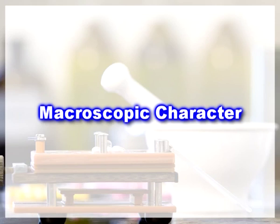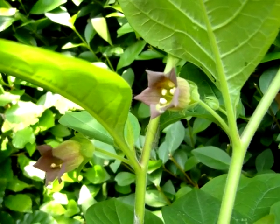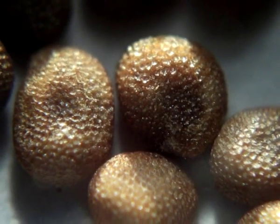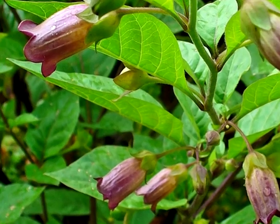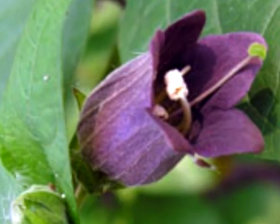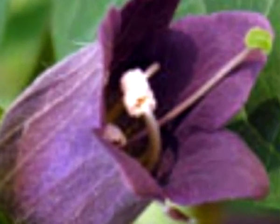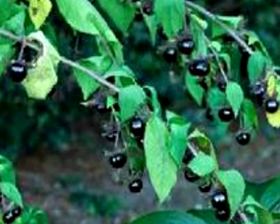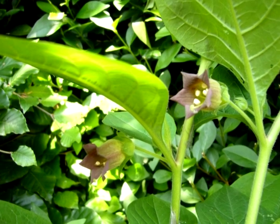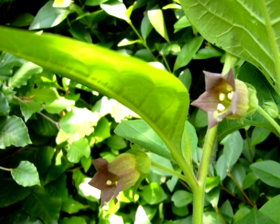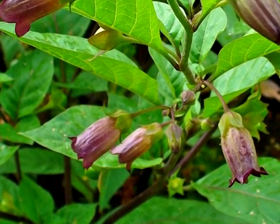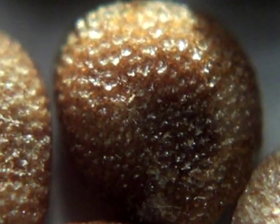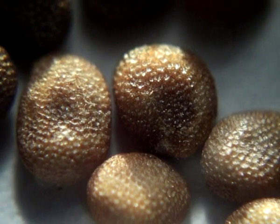Macroscopic characters of belladonna: Color — leaves are green to brownish; flowers purple to yellowish brown; fruits green to brown. Odour slight and characteristic; taste bitter and acrid. Size — leaves 5 to 25 cm long and 2.5 to 12 cm wide; corolla 2.5 cm long and 1.5 cm wide; fruits about 10 cm in diameter. Shape — leaves are ovate lanceolate to broadly ovate with acuminate apex, decurrent lamina, entire margin, petiolate, brittle and transversely broken. Flowers are campanulate with five small reflex lobes of corolla. Fruits are berry-shaped, subglobular with numerous flat seeds.